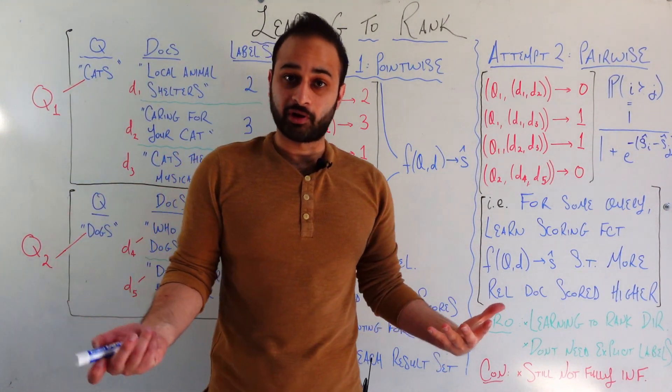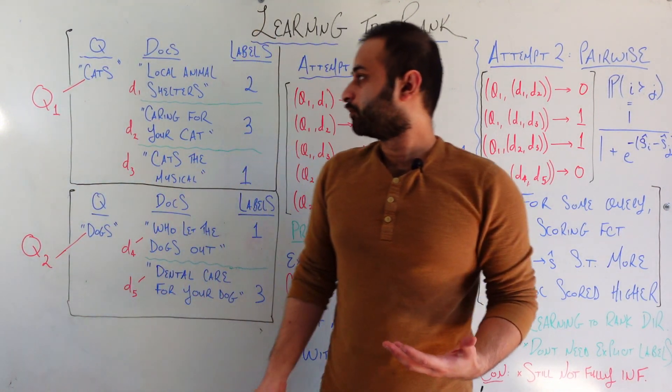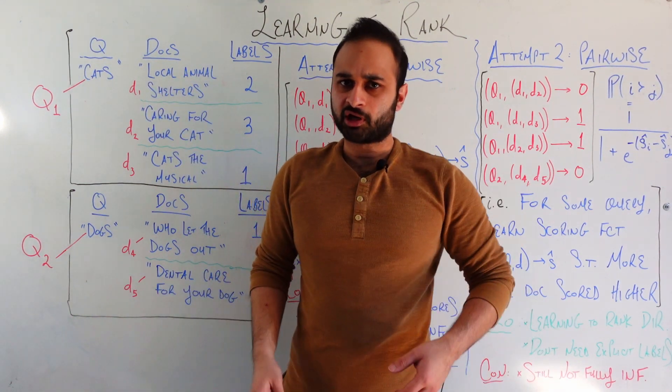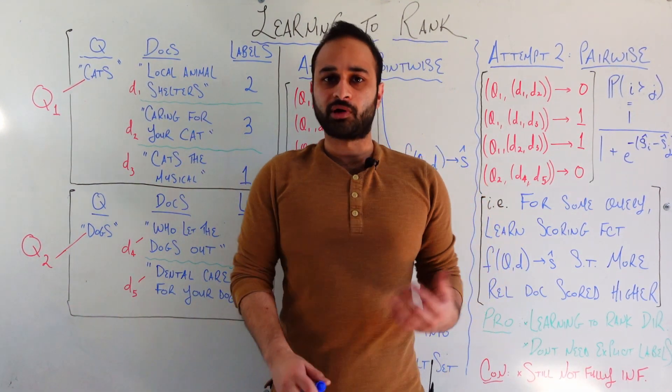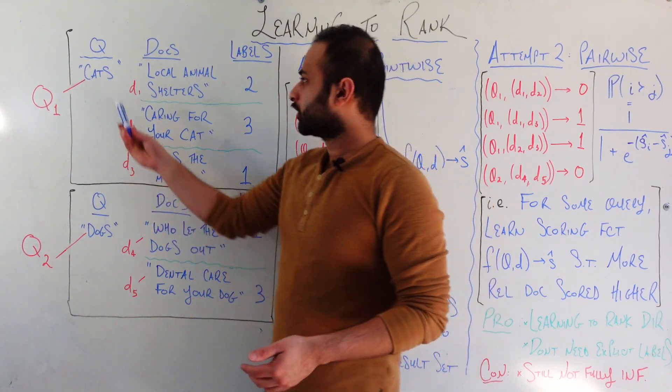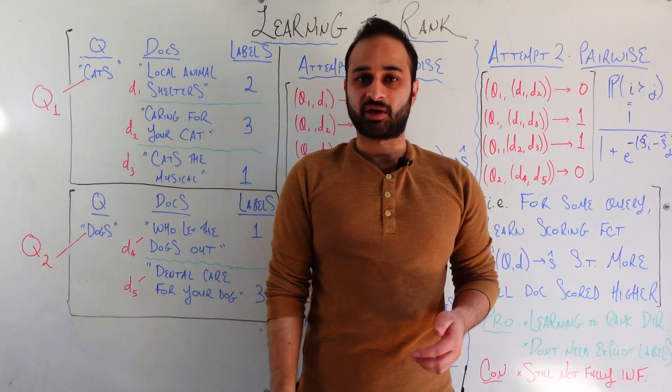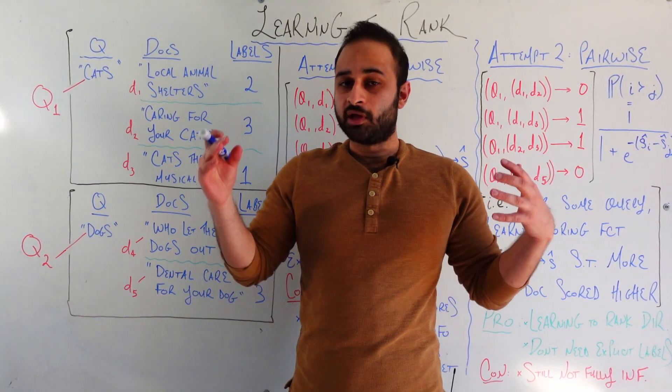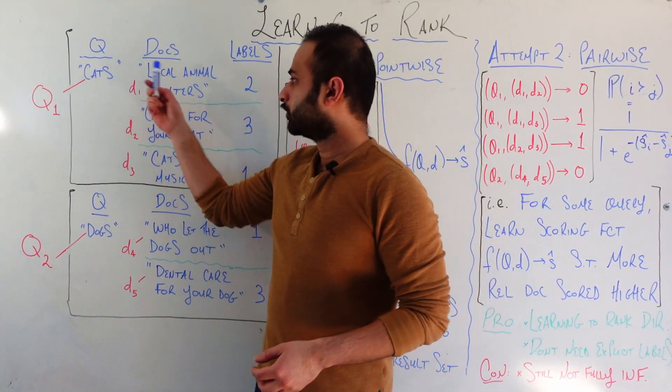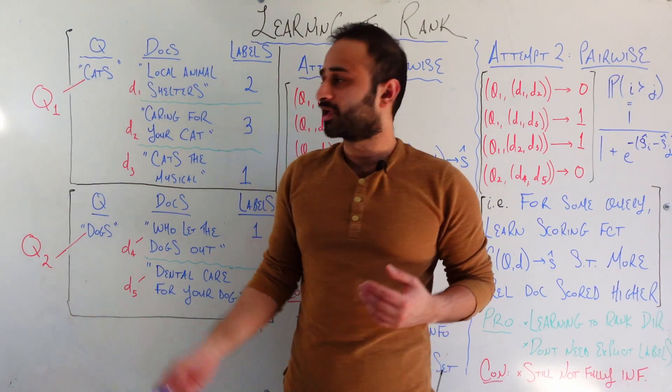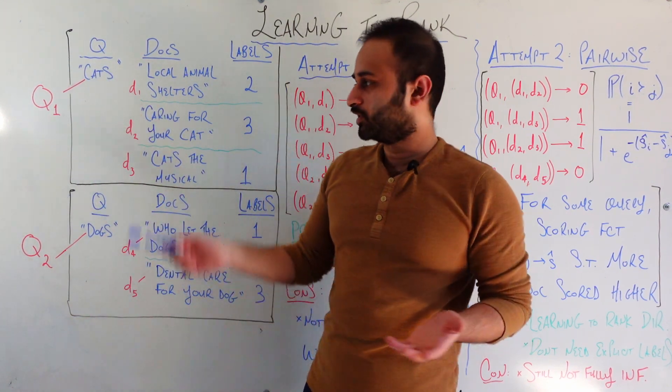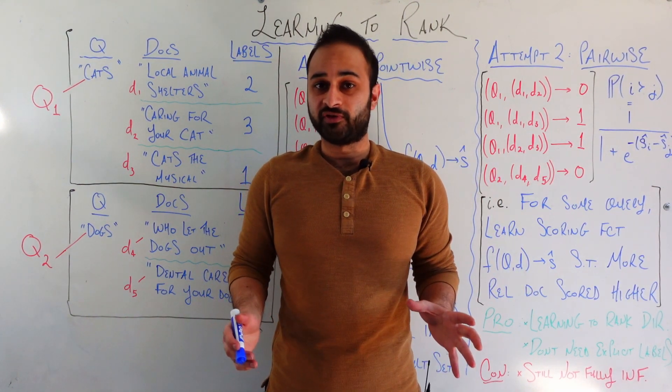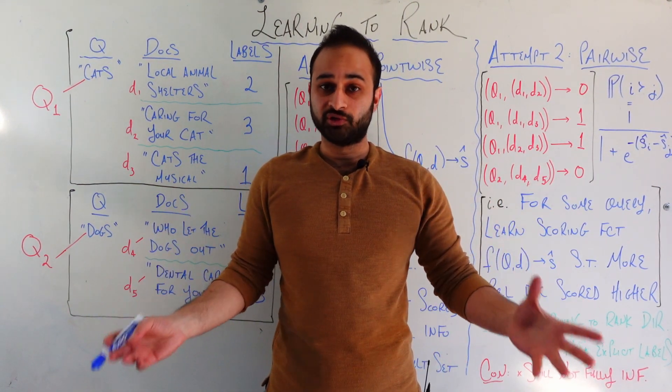And so for each pair of these guys, we can derive whatever features we want to derive. A couple that come to mind, for example, are if you're looking at document-level features, maybe how many words are in the document. If you're talking about query-level features, then you could talk about how complex is the query. You can even have features that are intersecting between your query and your document, like how many times does the word cats actually appear in each of these documents.